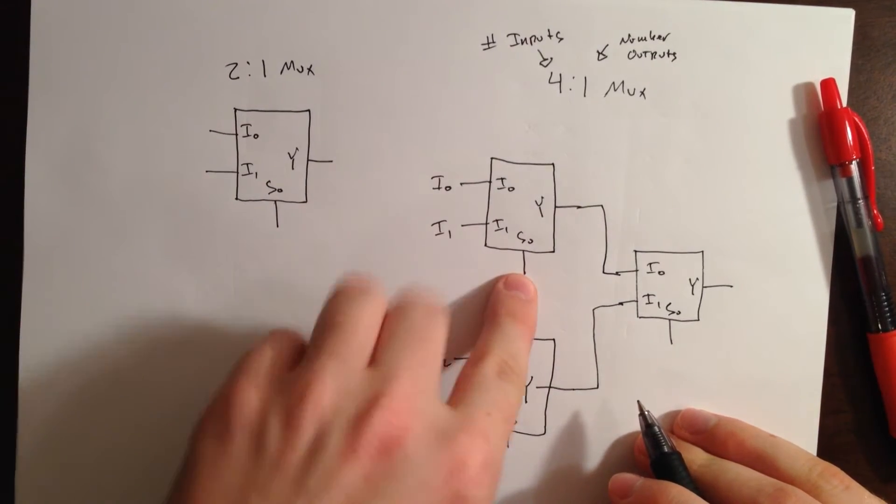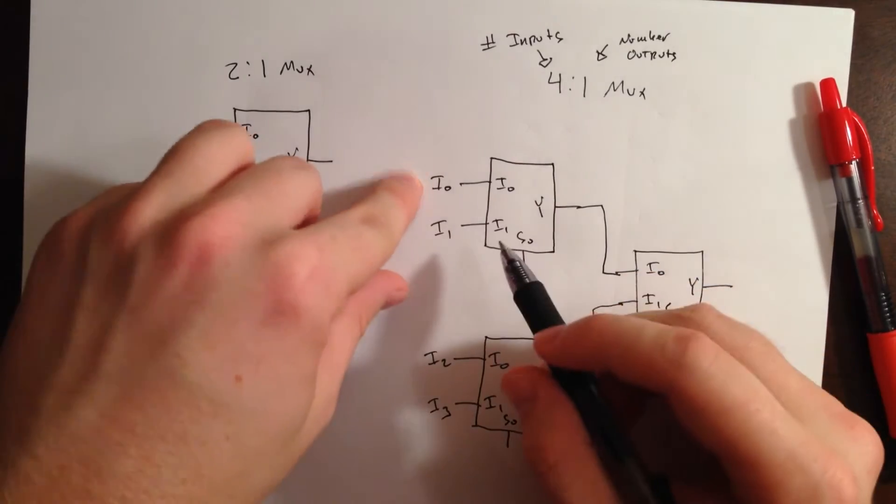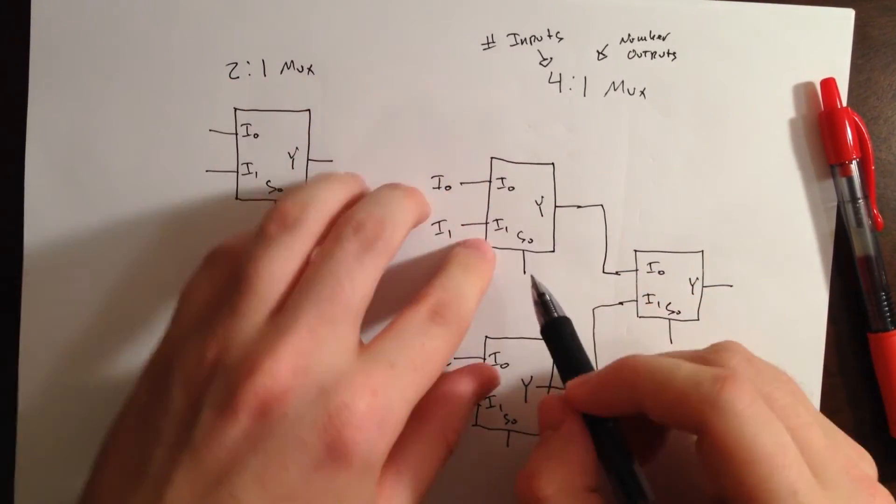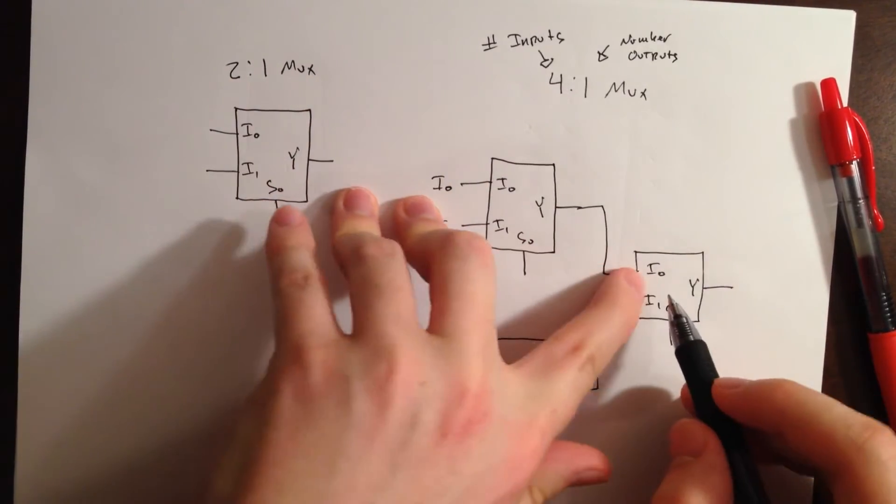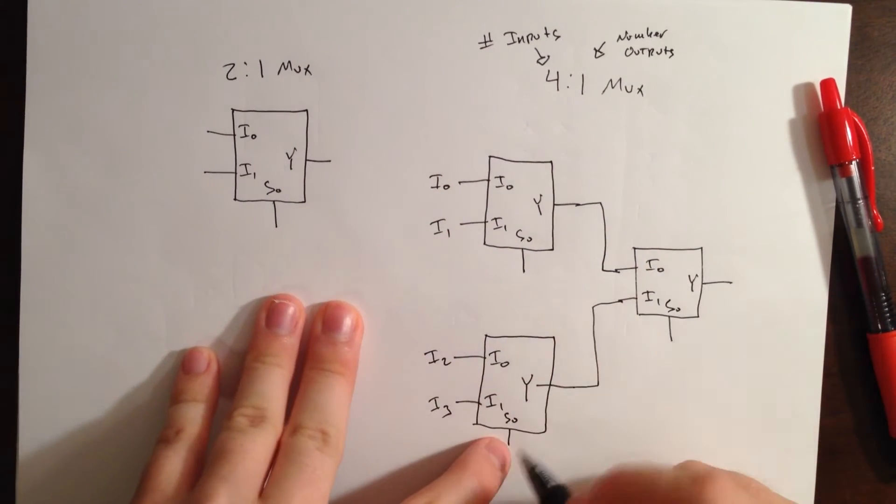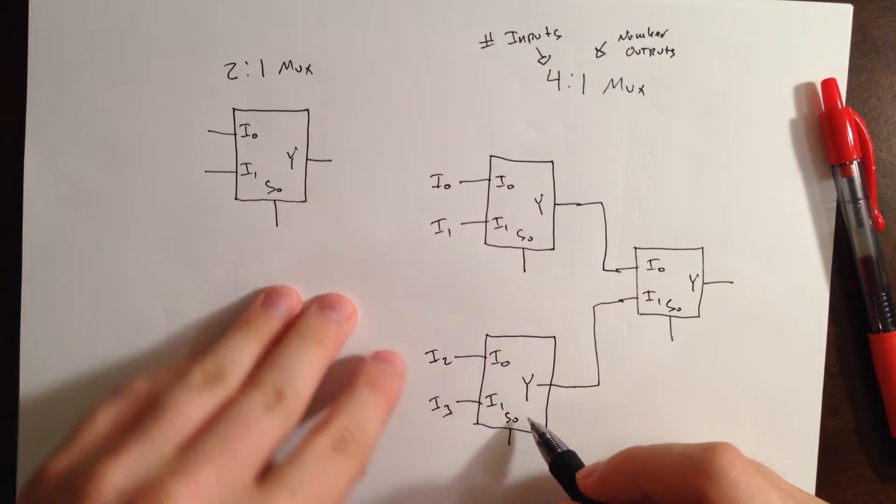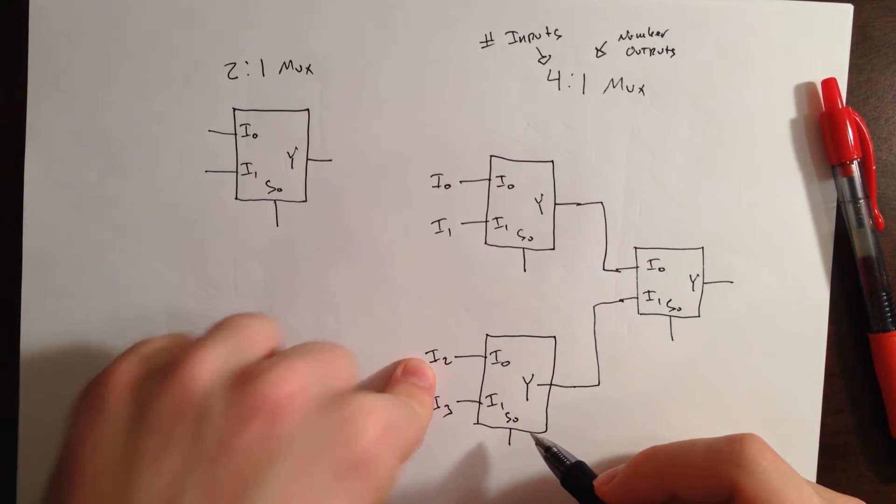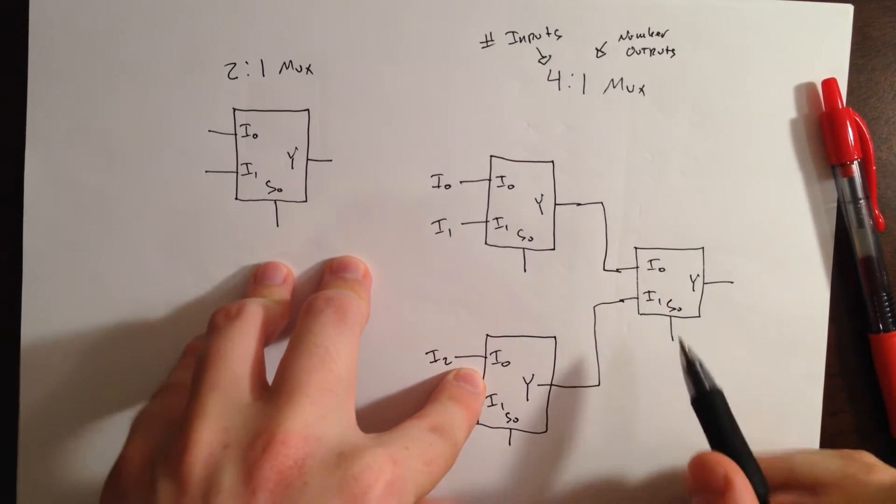So, whatever our selector is here, that'll choose our input, I0 or I1, and bring it to our 2nd multiplexor into I0. And, whatever our selector is here for S0, it'll select I2 or I3 and bring it into our input for I1.